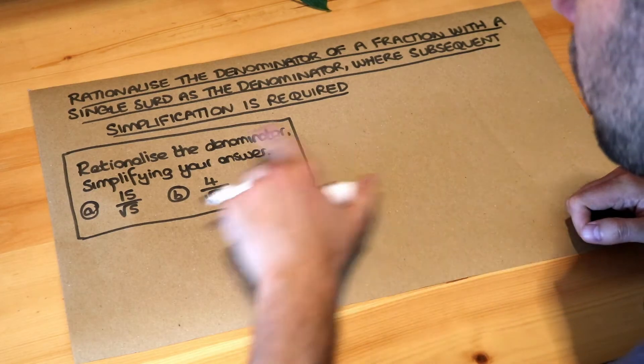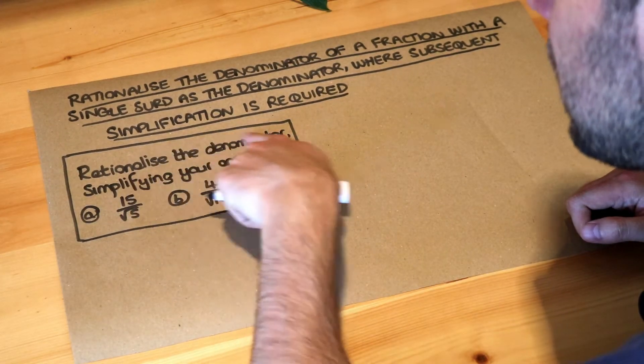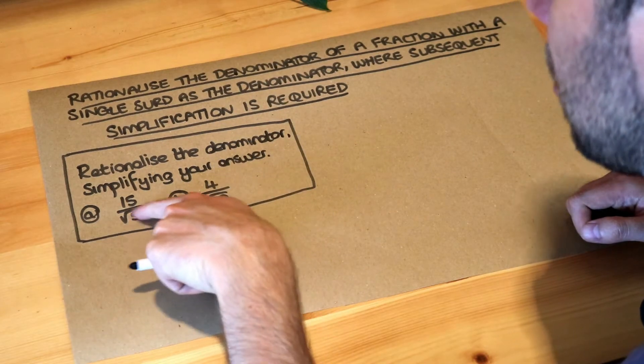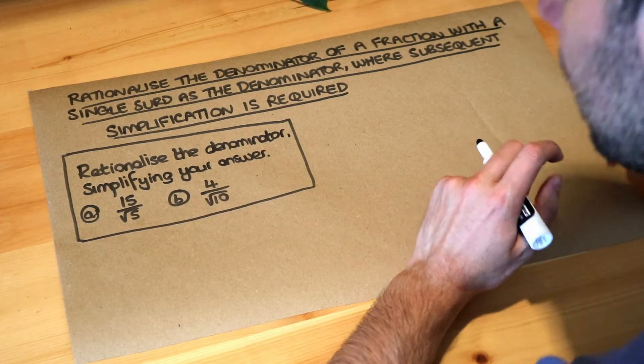So we want to rationalize the denominator. Rationalizing the denominator means that we don't want a surd, a square root in the denominator of the fraction, the bottom of the fraction. We want to simplify our answer.